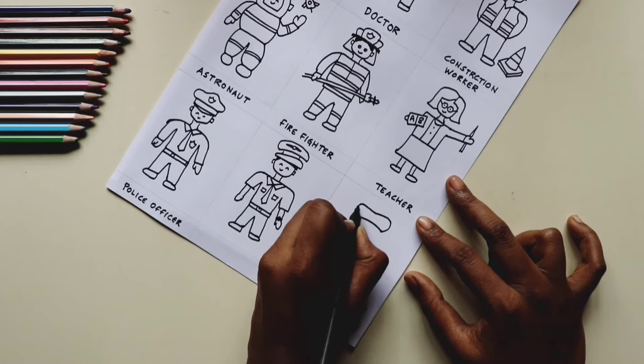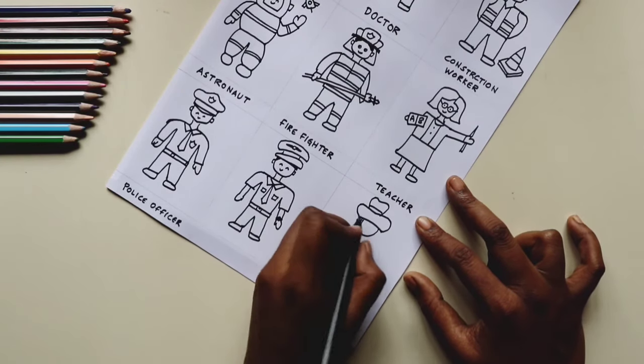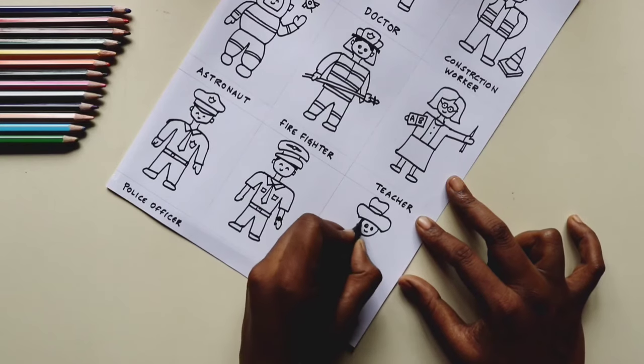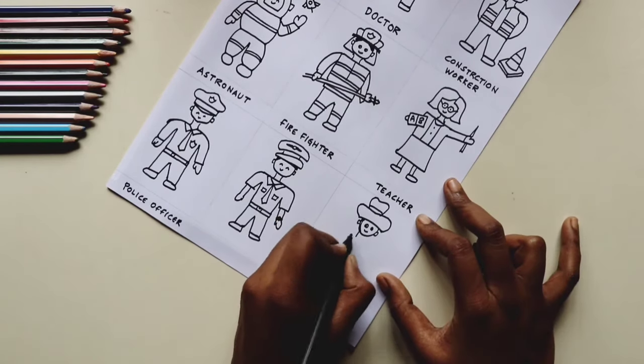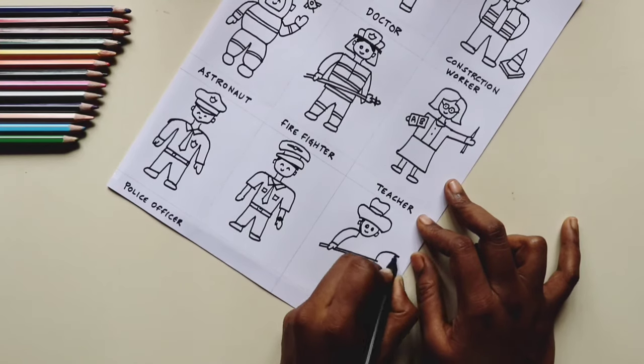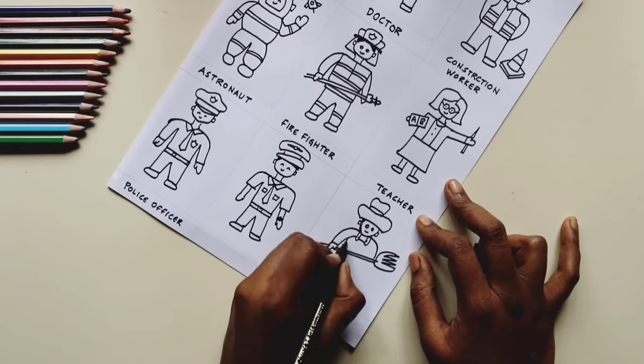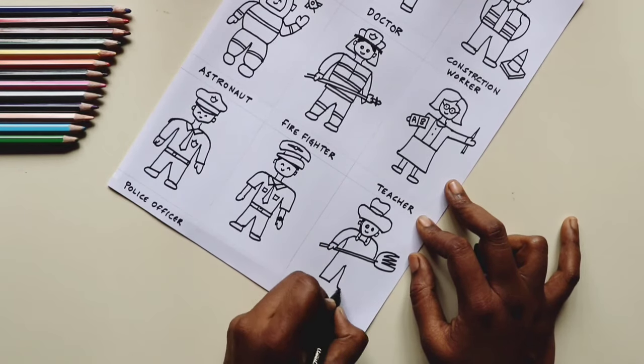The final one that we're going to be drawing is a farmer. We are going to give him a traditional hat and then his traditional, I guess it's called a jumpsuit, and a spade in his hand. You can also probably draw a basket of fruits or vegetables right next to him.